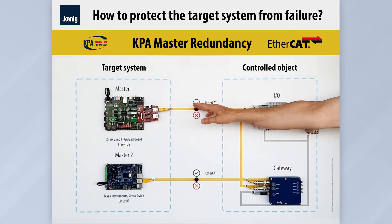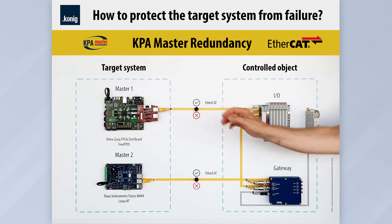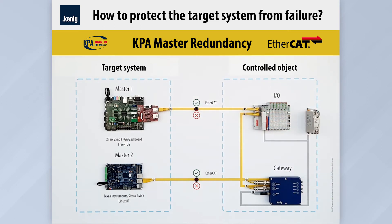By flipping the upper switch, a failure of the active master is simulated. If the next datagram consequently does not reach the passive master on time, the timer is triggered and the passive master takes over control. It starts to generate and send a new datagram to the network, with a delay equal to the watchdog timer and never exceeding one cycle.